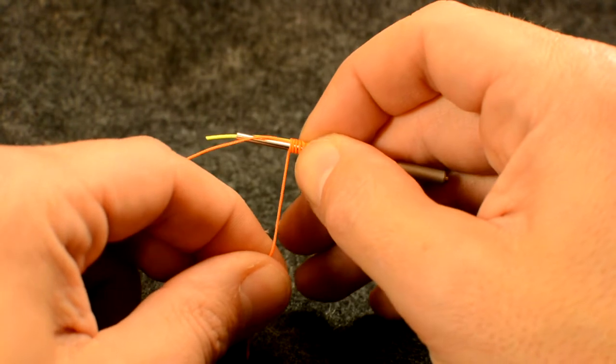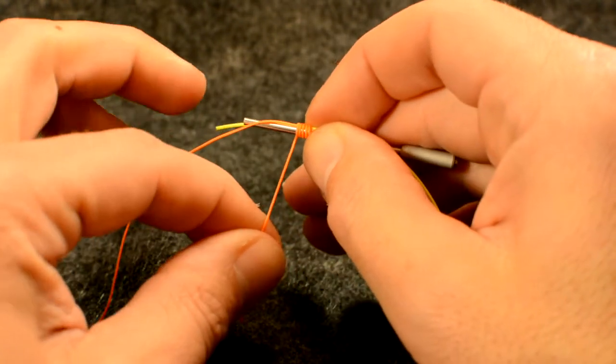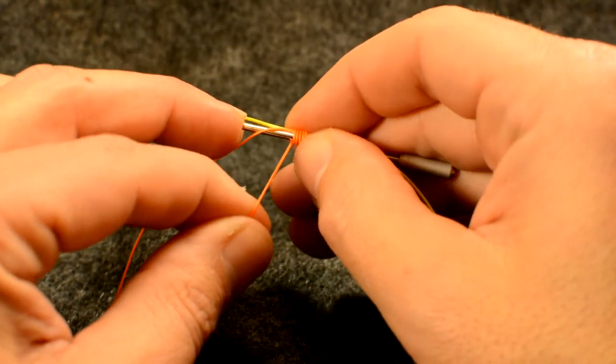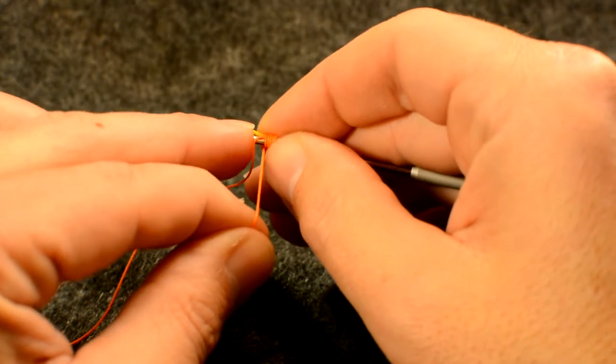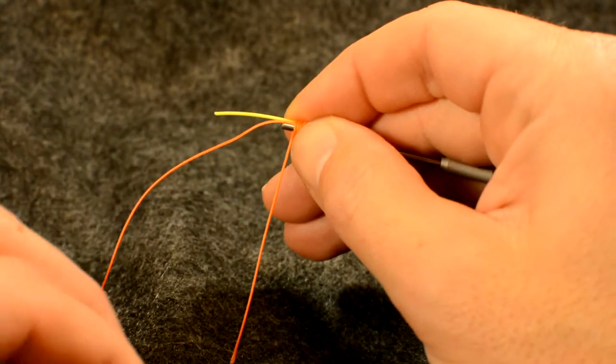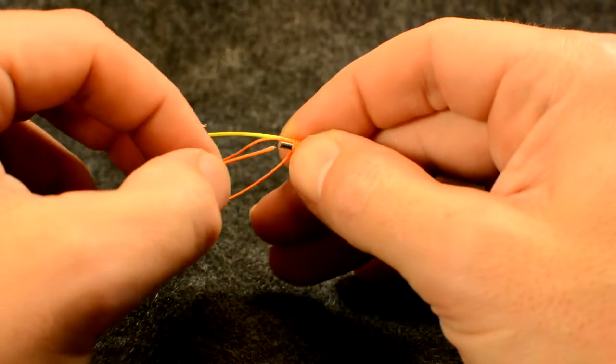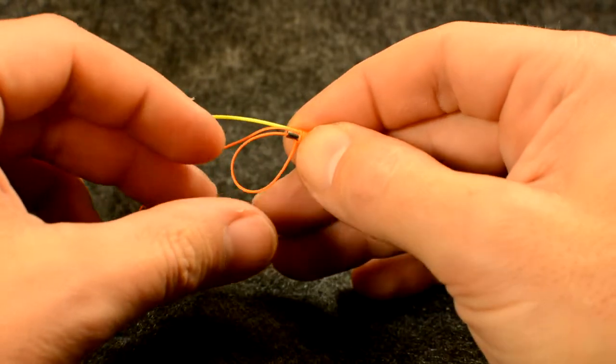Keep a hold of the tag end of the backing and slide the wraps towards the front of the tube. Now feed the tag end into the tube as far as possible.